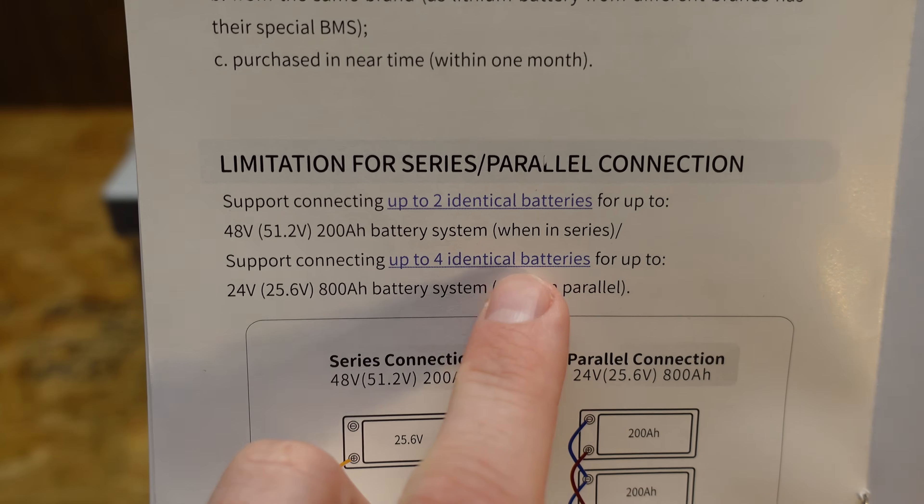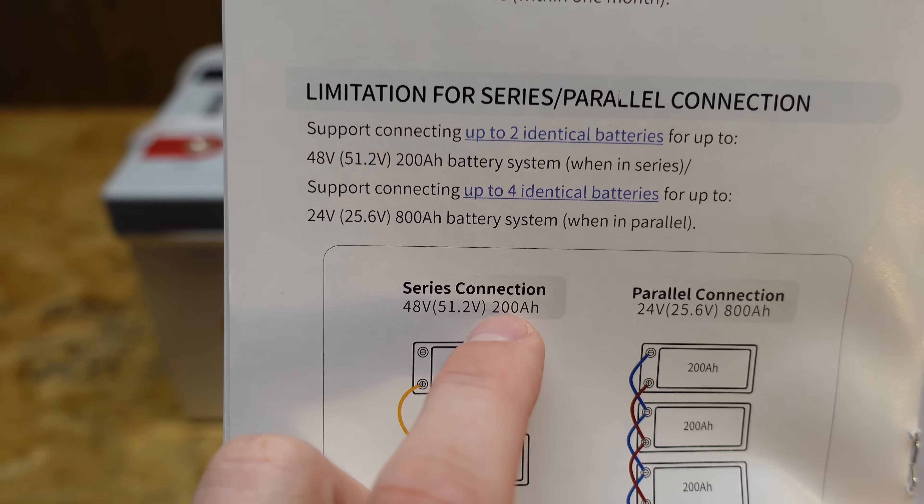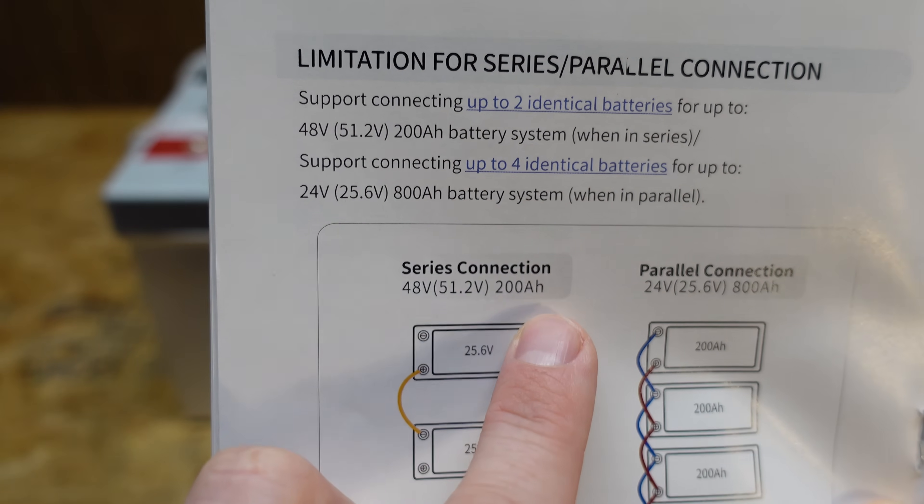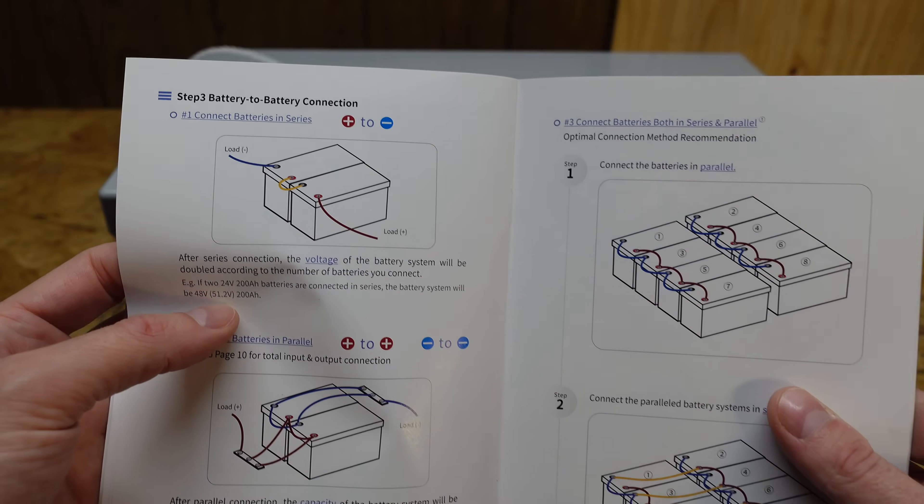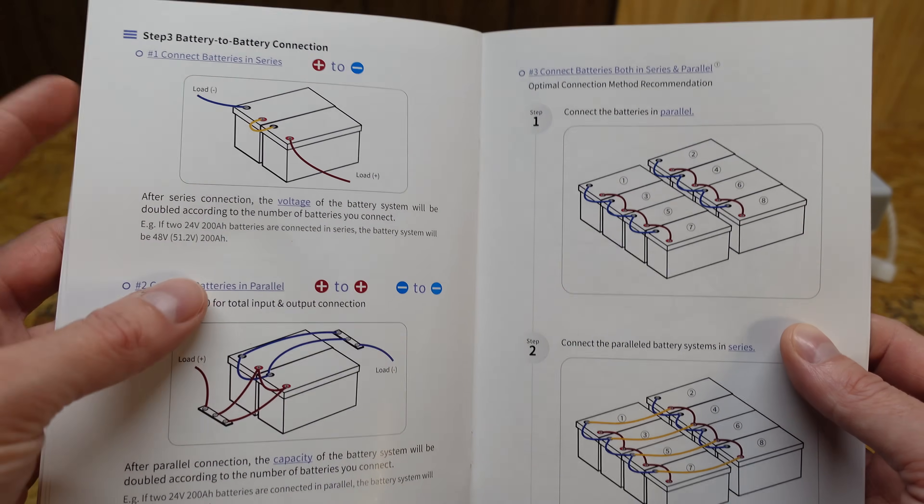So you can connect a max of two of these in series for a 48 volt battery, and you can connect up to four of them in parallel for an 800 amp hour battery. There's quite a few pages here explaining the series and paralleling steps.